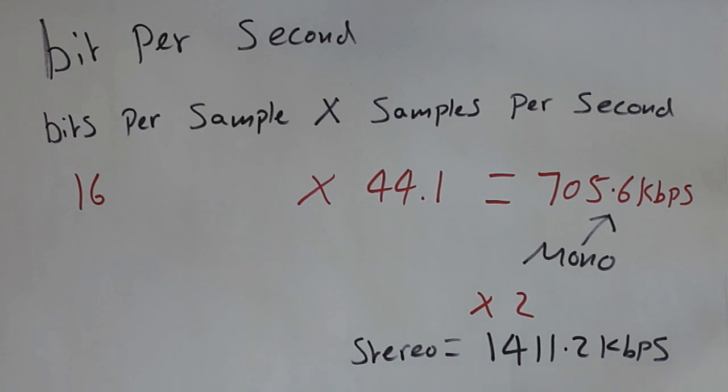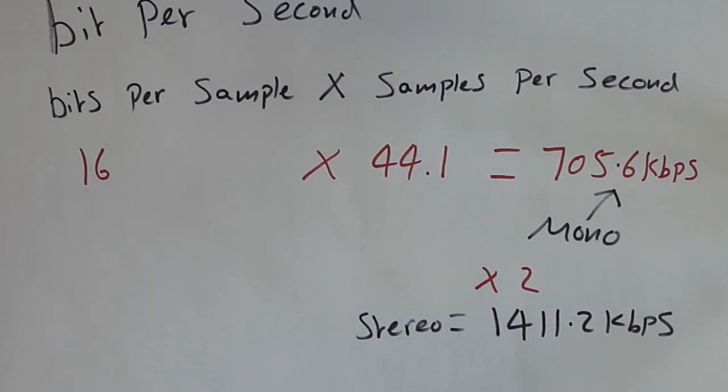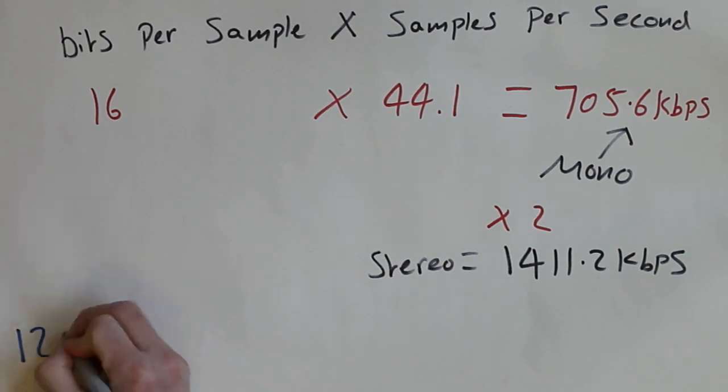You can work out the size of the whole audio file just by multiplying the bits per second by the number of seconds in the file. But overall, bitrate isn't that useful when you're talking about PCM audio, as you tend to work with the specific variables here.